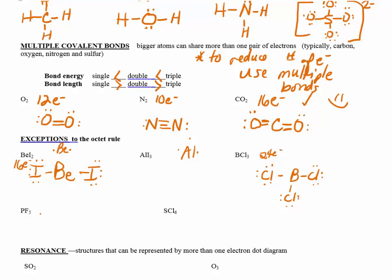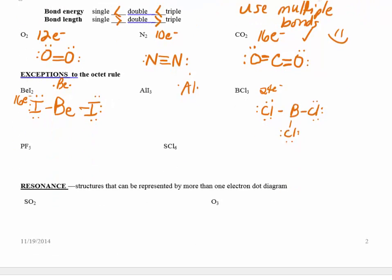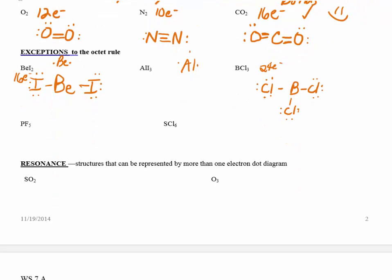There are also cases where an atom can hold more than eight electrons, but in pre-AP we won't focus on those much — just know it happens. Resonance is something we can talk about tomorrow in class. Resonance occurs when a double bond can be drawn in more than one valid position in the structure. See you tomorrow.